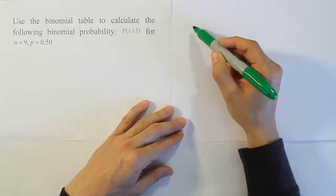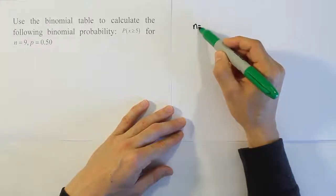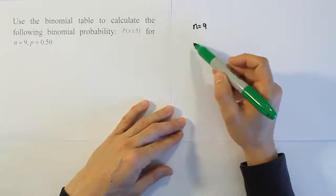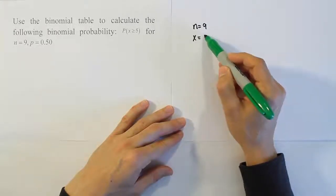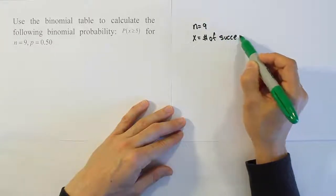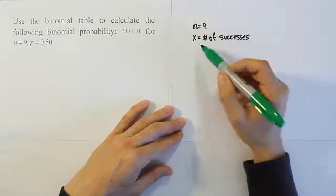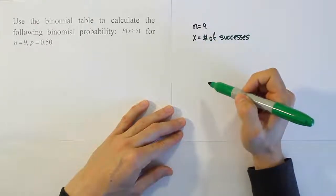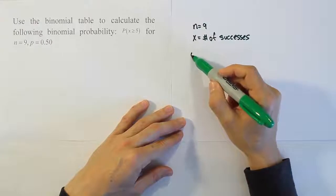If you take any scenario when n equals 9, the binomial probability distribution talks about the number of successes x. If you have 9 events, how many could be successes out of the 9? If you think about it, you could have 0, 1, 2,